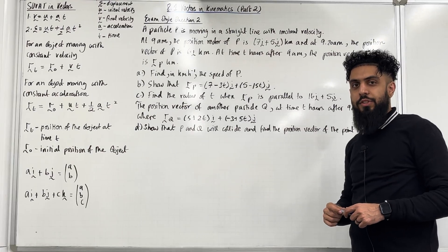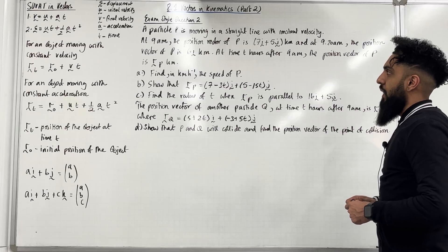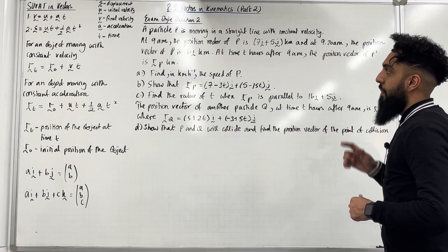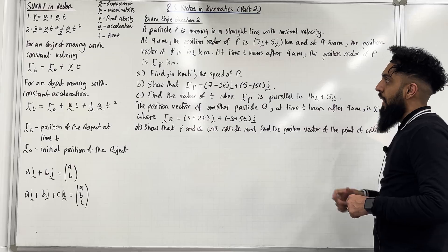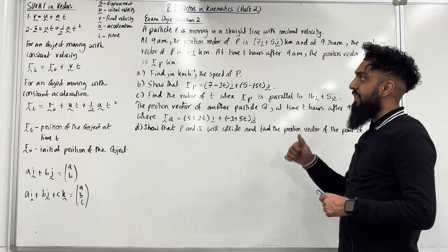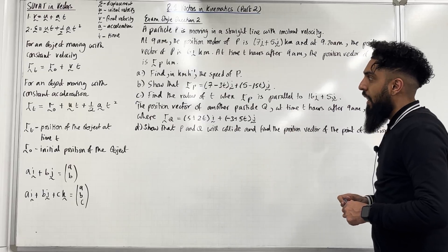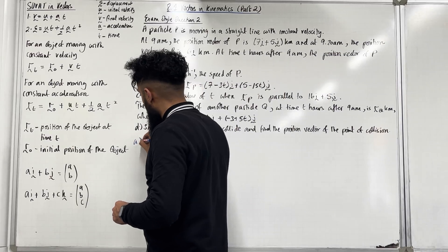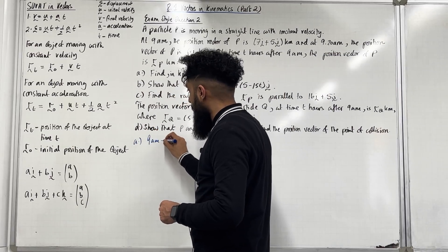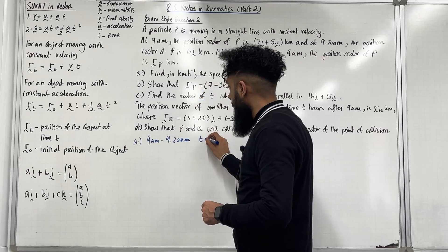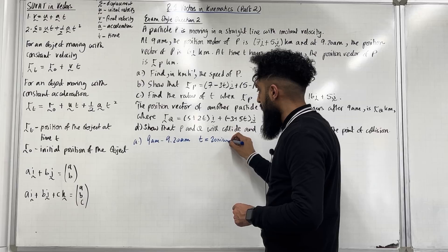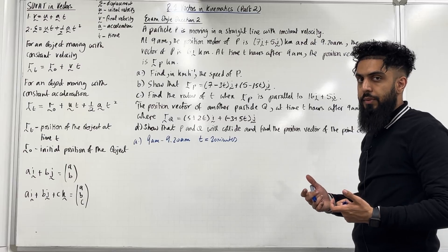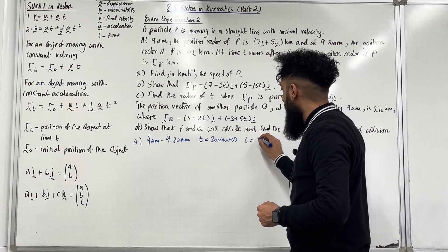Here is exam style question 2. A particle P is moving in a straight line with constant velocity. At 9 a.m., the position vector of P is (7i + 5j) km. At 9:20 a.m., the position vector of P is (6i) km. At time T hours after 9 a.m., the position vector of P is R_P km. Part A: find the speed of P in km/h. From 9 a.m. to 9:20 a.m., T = 20 minutes. Since speed is in km/h, converting: T = 20/60 = 1/3 hours.